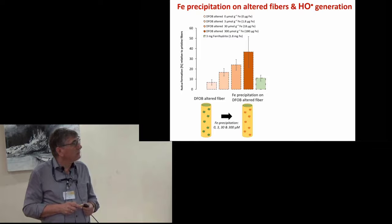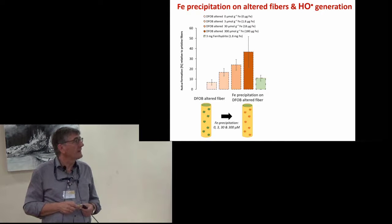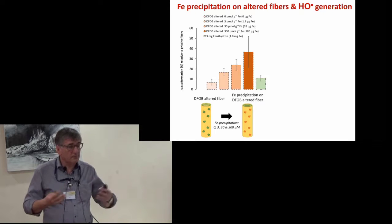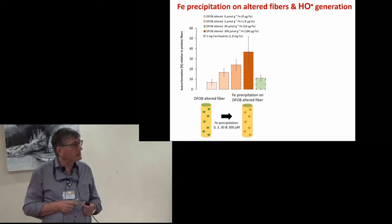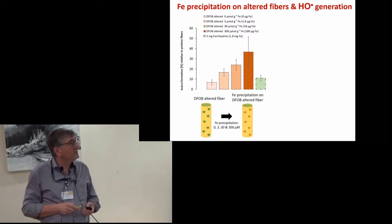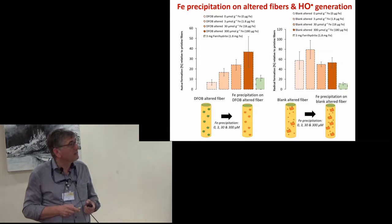Looking at hydroxyl radical formation relative to pristine fiber, the DFOB altered fiber shows less than 10% yield because all exposed iron atoms from the outermost magnesium layer and the exposed silicon layer—both octahedral and tetrahedral—are complexed by DFOB. This is not the case for blank altered fibers, which show a yield of 60%. For blank altered fibers, there are no vacancies in the exposed silicon layer. When we put 330 or 300 micromoles per gram extra iron on the fibers, DFOB altered fibers show a successive increase up to 40%. In case of blank altered fibers, within error bars there is practically no change.